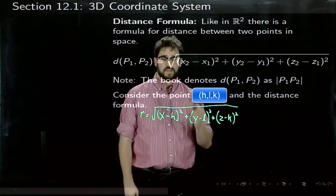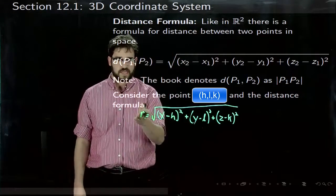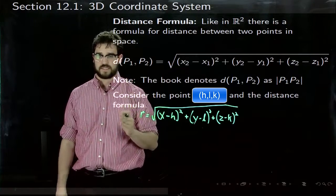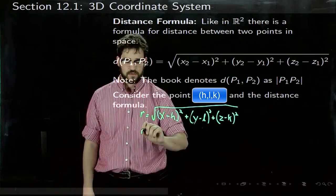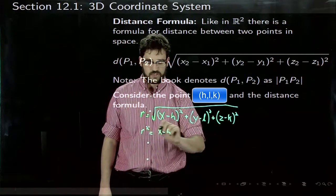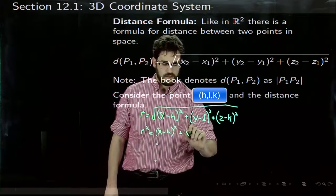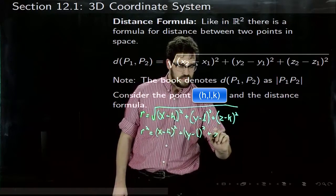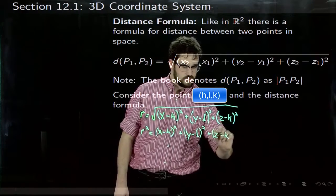What happens if we want all points at a specific distance? If we square both sides, we get R² equals (x-h)² plus (y-l)² plus (z-k)².